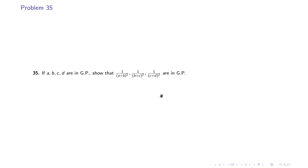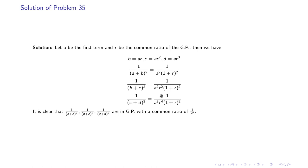Problem 35: if A, B, C, D are in GP, show that 1/(A+B)², 1/(B+C)², 1/(C+D)² are in GP. We have already proven that (A+B)², (B+C)², (C+D)² are in GP, so these are just their reciprocals. The terms become 1/[A²(1+R)²], 1/[A²R²(1+R)²], and 1/[A²R⁴(1+R)²], which are in GP with common ratio 1/R².